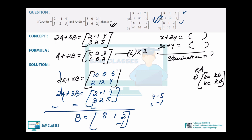Very simple question. Even if they change values — like 4A + 5B — the concept remains the same: eliminate the variable they haven't asked for and find the one they have asked. Any doubt, put it in the comment section or ask in the doubt class.